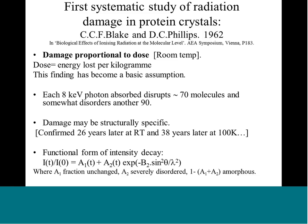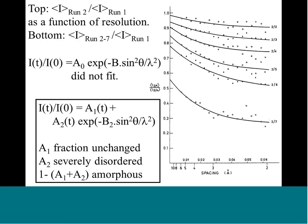They monitored a few reflections and took some datasets over a resolution range, which is the x-axis. You can see that they divided their second dataset by the first, then the third by the second, and so on, and saw gradually that the high resolution data damaged faster — the intensity went down faster than it did at low resolution — and they came up with this model.